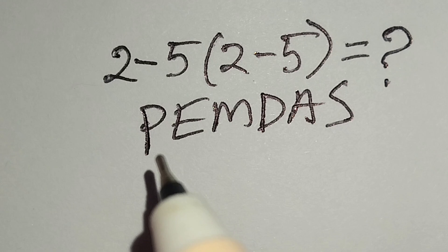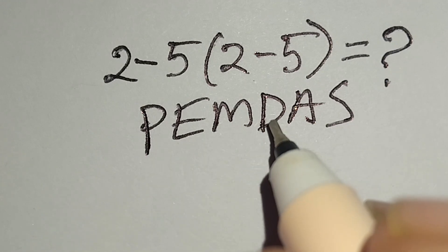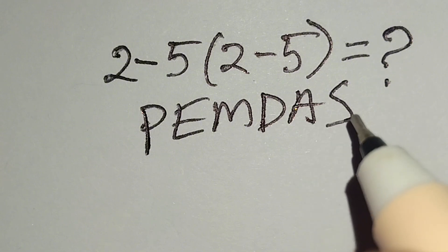According to the PEMDAS rule, first we work with parentheses, then exponents, then multiplication or division, then addition or subtraction.